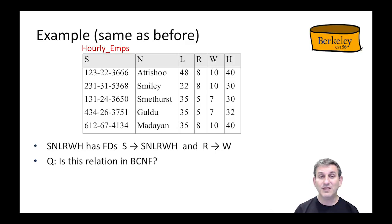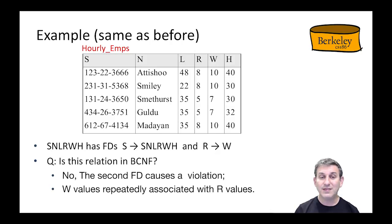Here's an example, the same hourly_emps example we had before: S, N, L, R, H. It has functional dependencies - you'll recall S being a key, so S determines SNLRH, and rating determines wage, R determines W. Is it in BCNF? The answer is no, because that second functional dependency causes a violation. R is not a super key. W values are repeatedly associated with duplicate R values - we have R being 8 multiple times and so we have W being 10 multiple times, similarly for R equals 5 and W equals 7.